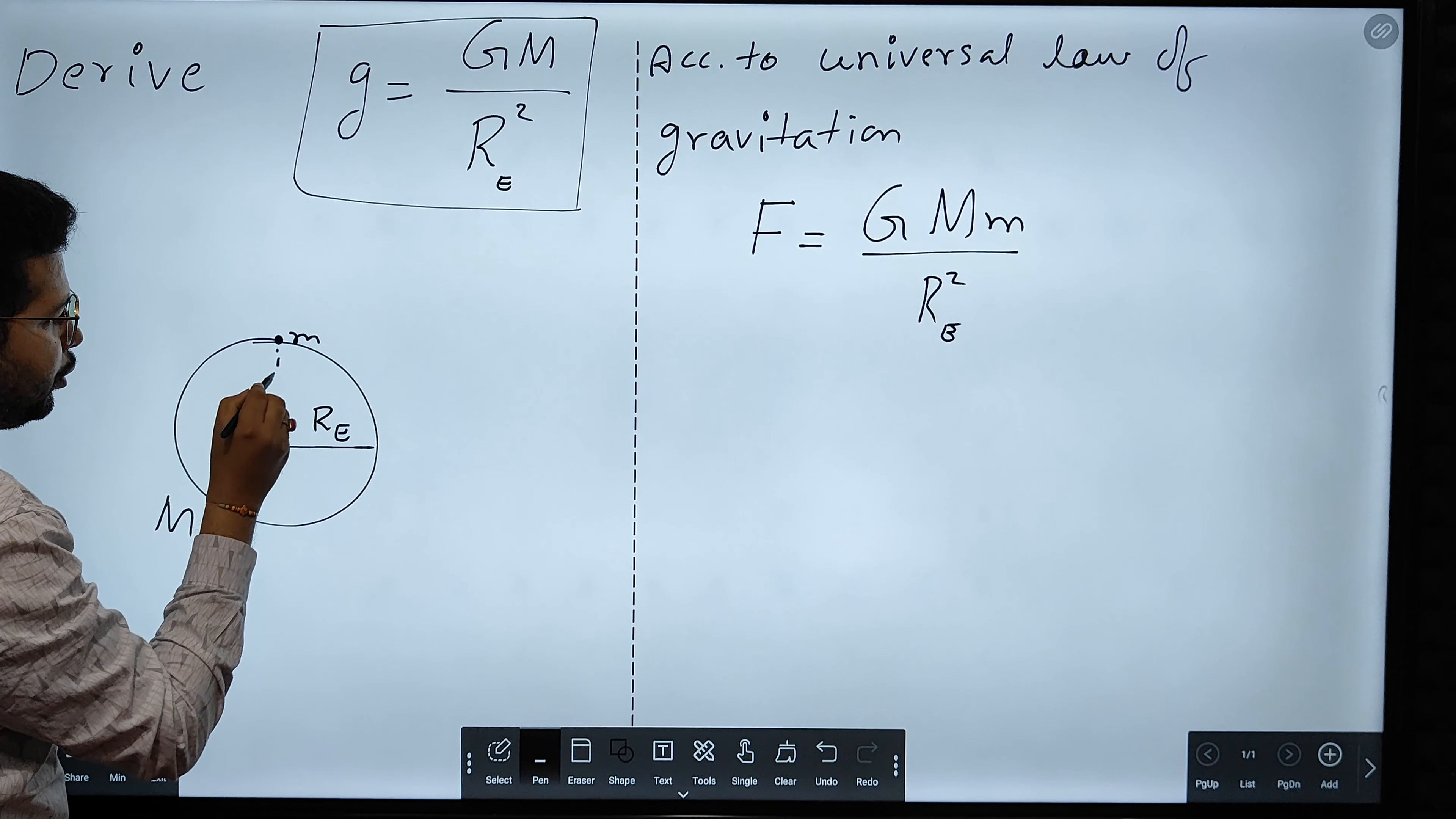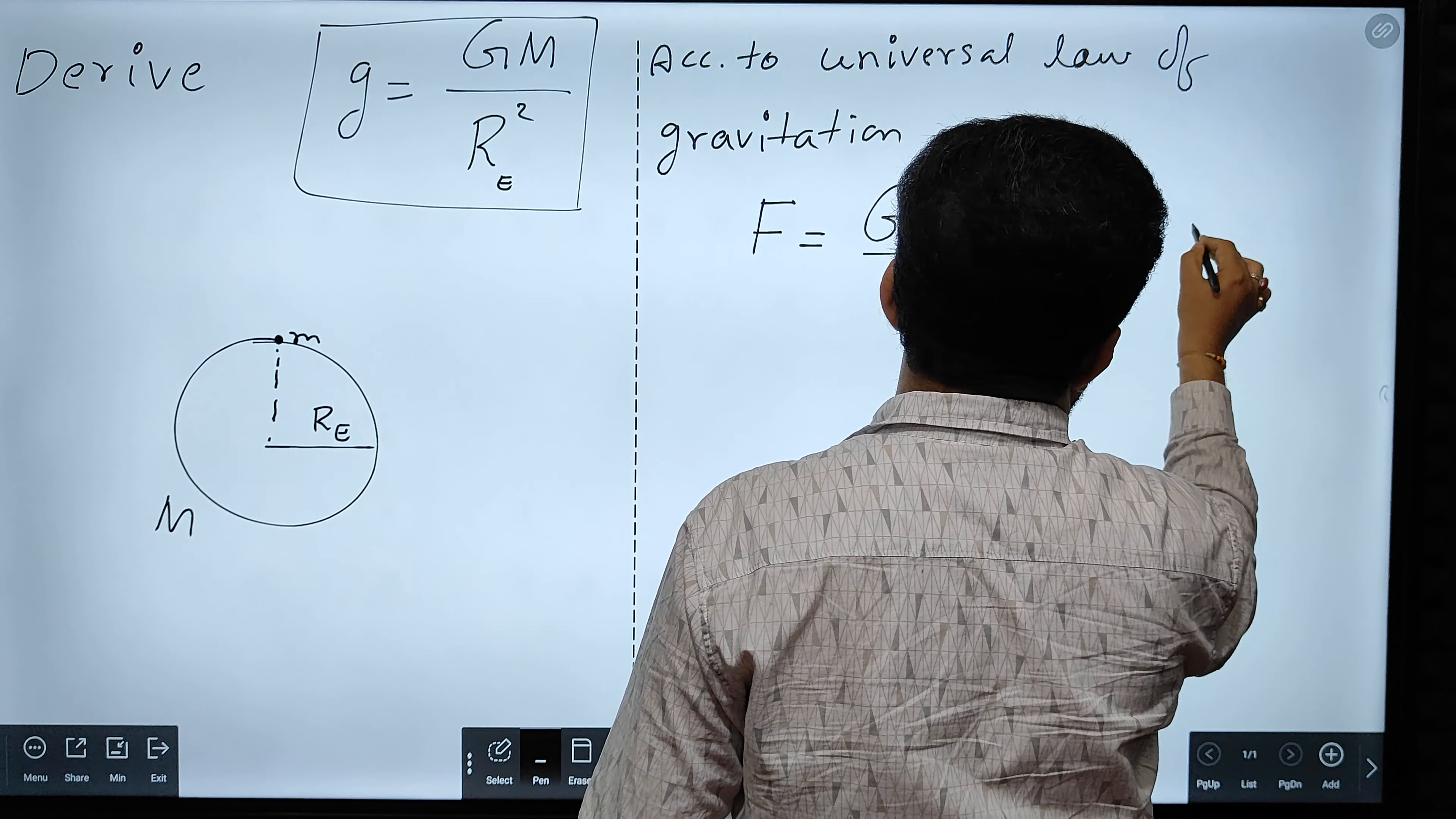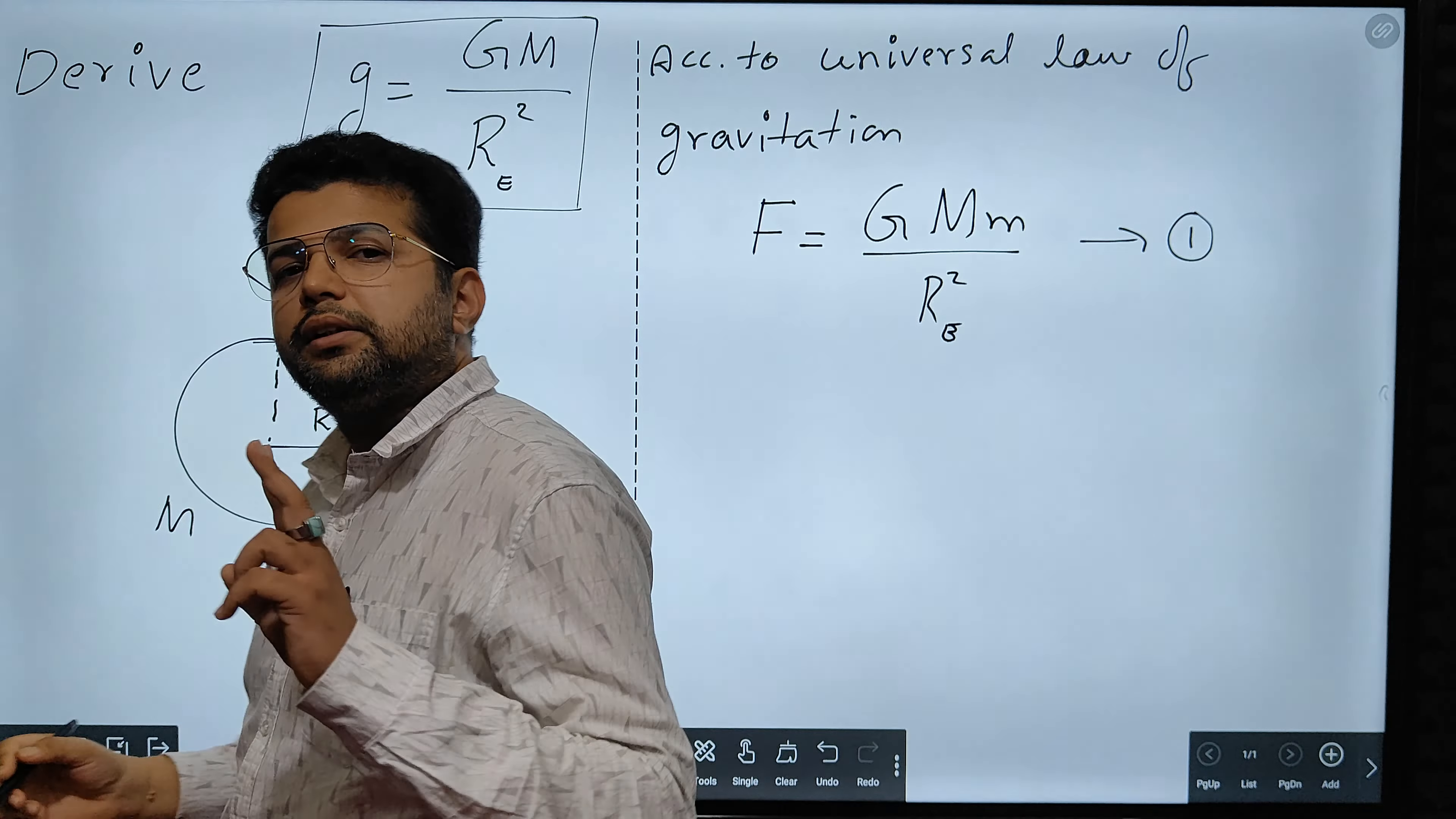What is the distance between the two? Distance between the two is equal to radius of the Earth, Re whole square. So this is my equation number one.